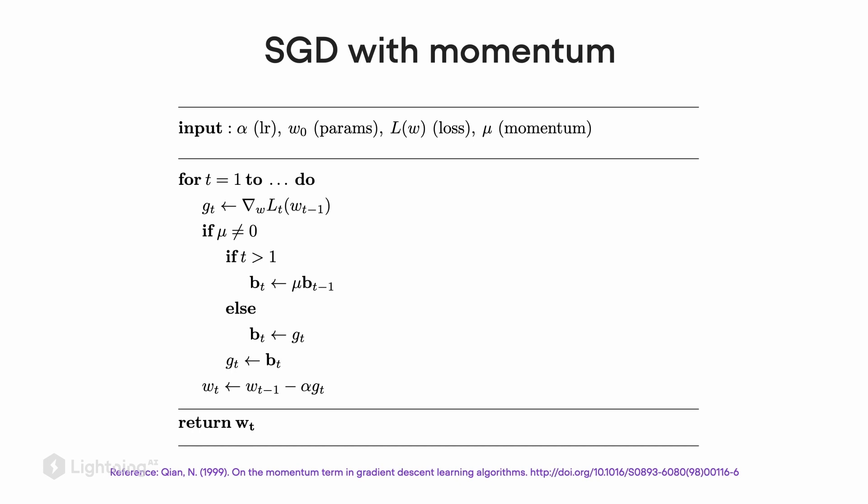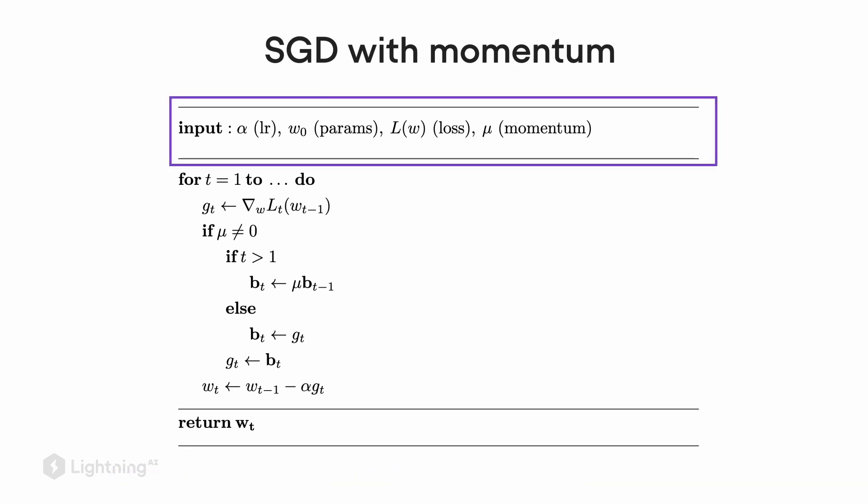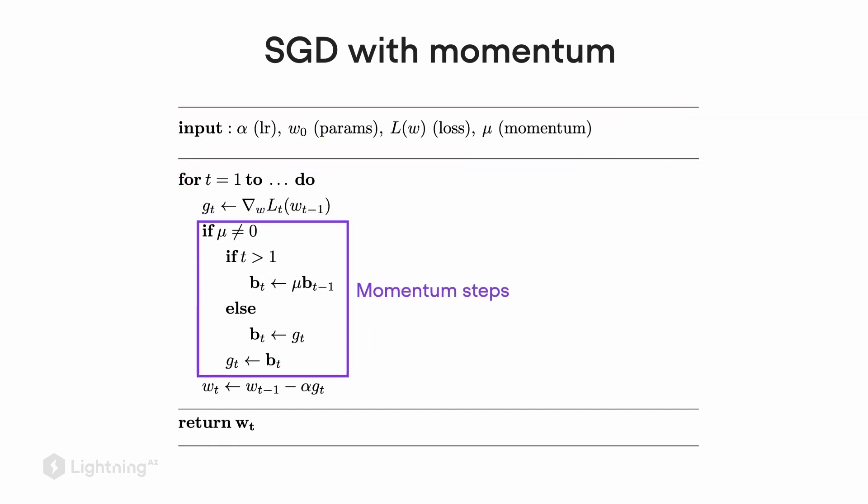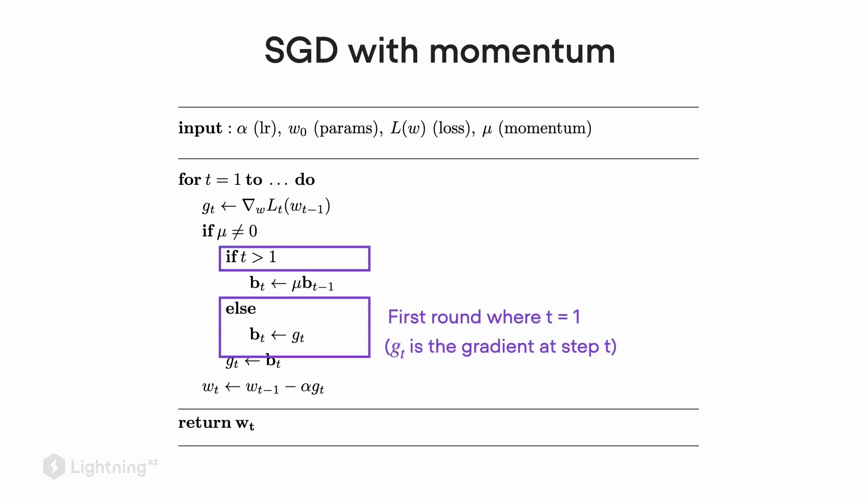Here's an outline of the SGD algorithm. This is a lot of information and we are going to walk through this step by step. First, let's define the key variables here. We have alpha for the learning rate, w0 for the parameters of the network, which includes the bias unit. Then we have l for the loss and μ for the momentum term. Now in this box here, these are the momentum steps. These are the new steps. If you ignore this box, it's essentially just like the regular SGD procedure. Everything that the momentum adds to the algorithm is shown here in this box.